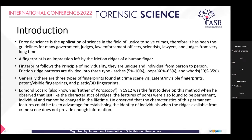Forensic science is the application of science in the field of justice to solve crimes, and has been used for a very long time. A fingerprint is an impression left by the human finger due to friction ridges. Fingerprints follow the principle of individuality — they are unique to every person. Friction ridge patterns are divided into three types: arches, loops, and whorls.